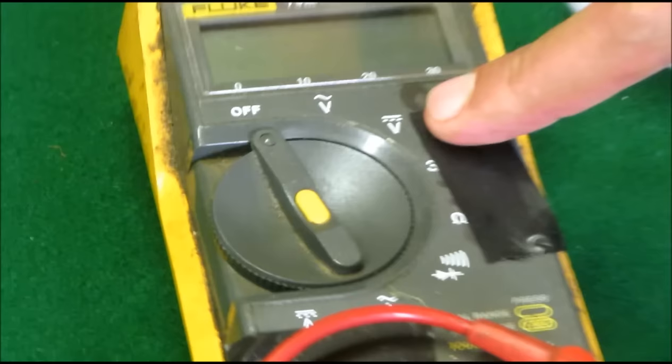In your multi-volt meter, you have your off position, AC volt, DC volts, and then down here, this little upside-down U, it might look like the symbol Omega signal, the ohm signal, you put your meter on that.